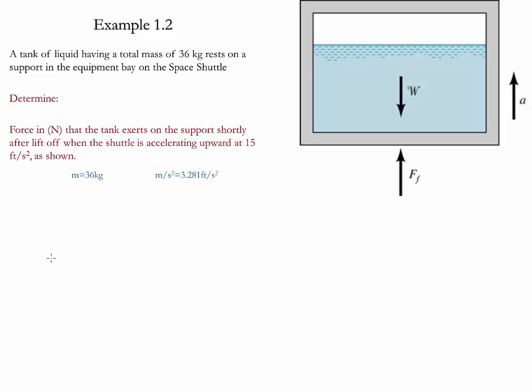The first step is to draw a free body diagram. This is the tank, and we have two forces acting on it: the weight, which is going downwards, and the force acting on it from the support.